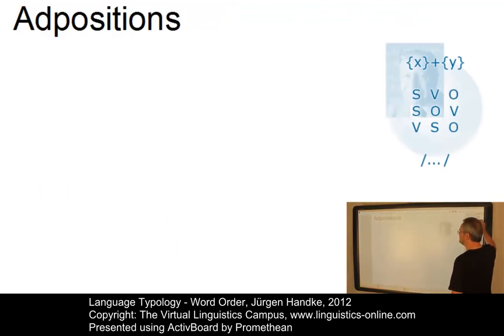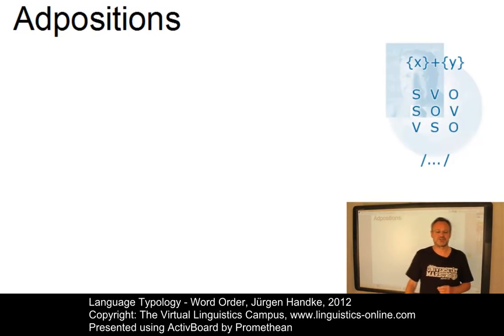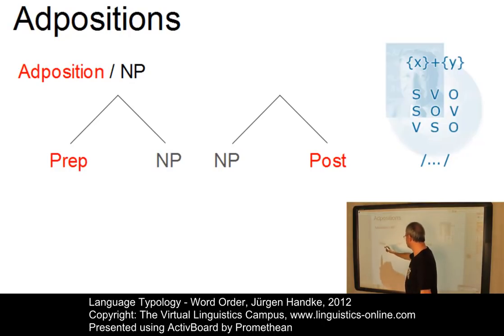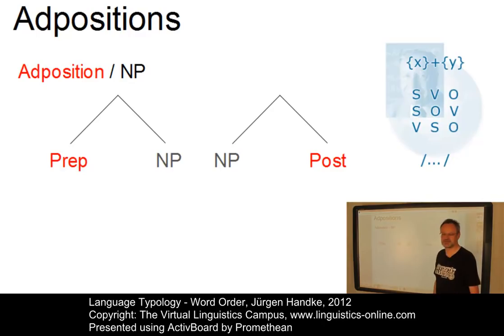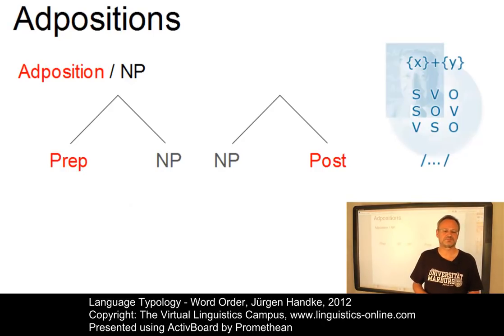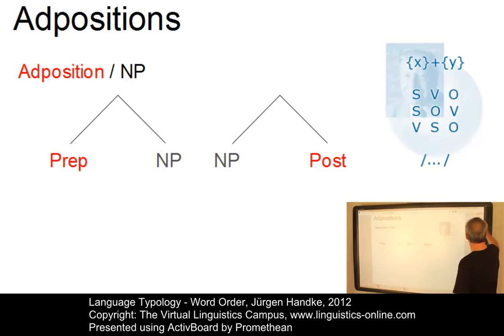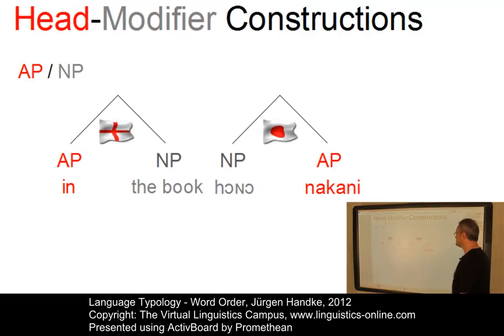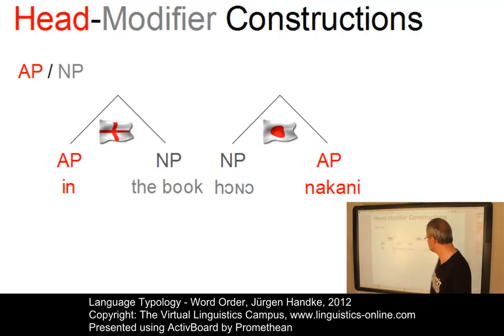Another well-known head-modifier pattern concerns adpositions. Adpositions is a head term for, on the one hand, prepositions — where the adposition precedes its noun phrase — or postpositions — where the adposition follows its noun phrase. The adposition is always the head of such constructions because, depending on the language, it determines the choice and maybe the case of the noun phrase. In English, we have prepositions only: 'in the book.' In Japanese, 'hongo nakani' has the noun phrase (the modifier) preceding its head — so we have postpositions in Japanese.